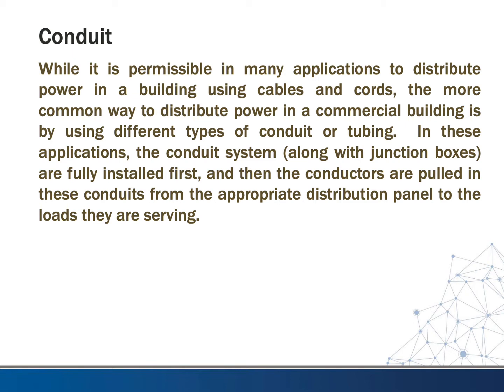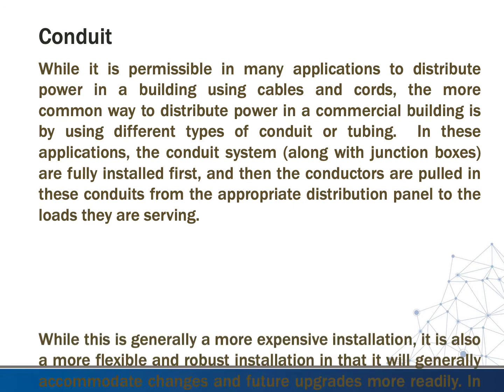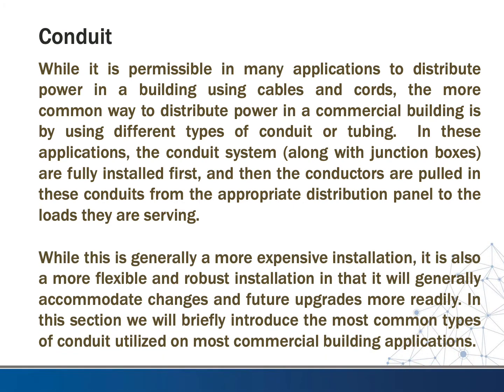While it is permissible in many applications to distribute power in a building using cables and cords, the more common way to distribute power in a commercial building is by using different types of conduit or tubing. In these applications, the conduit system along with appropriate junction boxes are fully installed first, and then the conductors are pulled in from the appropriate distribution panel to the loads they are serving. While this is generally a more expensive installation, it is also more flexible and robust, generally accommodating changes and future upgrades more readily. In this section we'll briefly introduce the most common types of conduit utilized in commercial building applications.